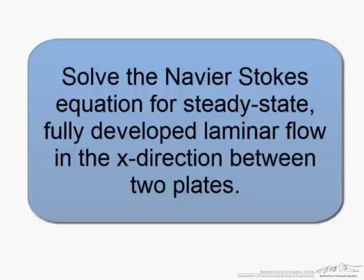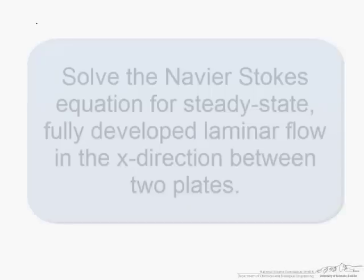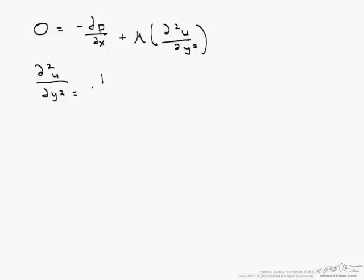So what we end up with for Navier-Stokes is that 0 equals minus dp/dx plus mu d squared u dy squared. We can rewrite this as d squared u dy squared equals 1 over mu dp/dx.